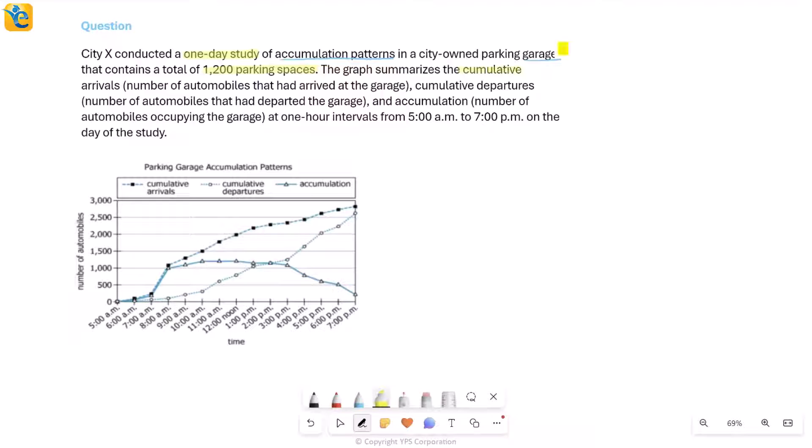It tells us that the graph summarizes the cumulative arrivals, total arrivals which is the number of automobiles that had arrived at the garage, then cumulative departures which is the number of automobiles that had departed the garage, and then finally accumulation, which is the number of automobiles occupying the garage at one hour intervals from 5 a.m. to 7 p.m. So let me try to read all of these values here. I do see this starting at 5 a.m. and ending at 7 p.m. on the X axis where time is represented.